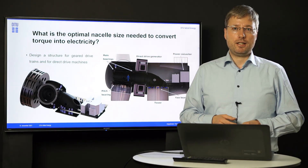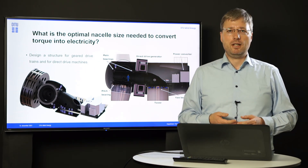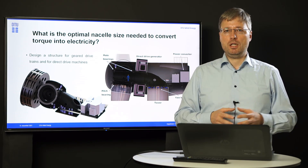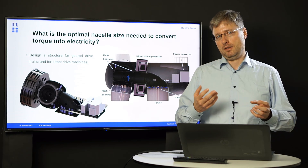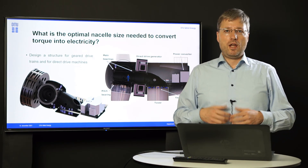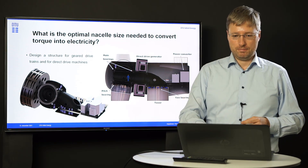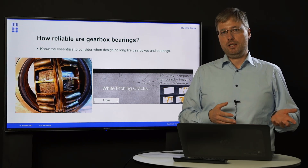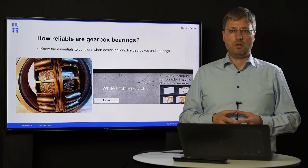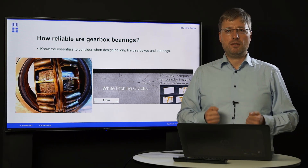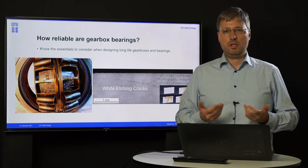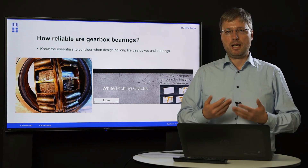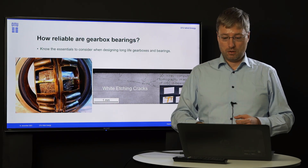We look at state-of-the-art generator systems such as direct drive machines and also superconducting machines, and we look at the structure in the nacelle to accommodate those machines. A very prominent failure cause is white edge cracking, which we find in gearboxes and in large-scale roller bearings. Since it is very expensive to change those parts on an offshore turbine, in this course we will teach you everything about how to characterize that kind of failure and how to avoid it by designing reliable gearboxes and roller bearings.